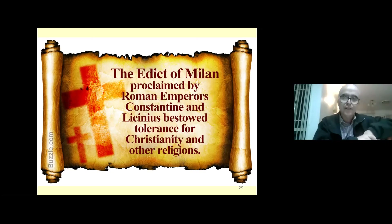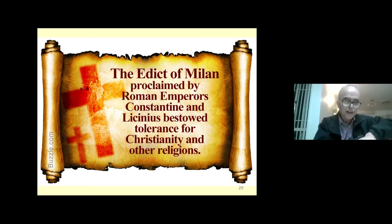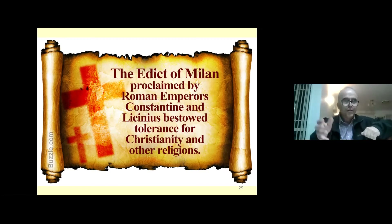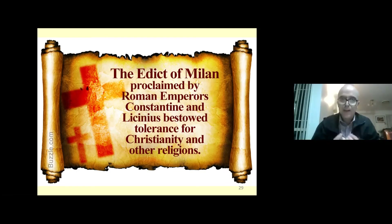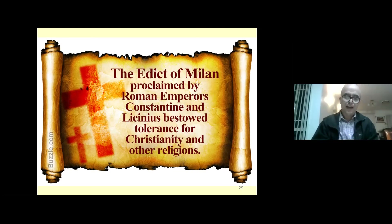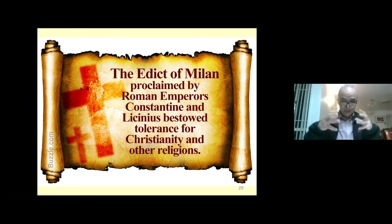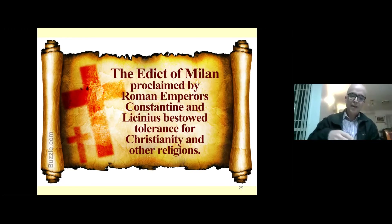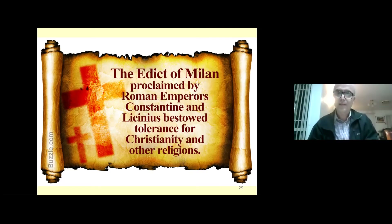On that occasion the two emperors made an agreement called the Edict of Milan, which officially granted full tolerance to Christianity and all religions in the Roman Empire, and also offered restoration of all property seized during Diocletian's persecution. This granted tremendous relief for Christians suffering under the empire — those worshiping in secret could now come out of hiding.